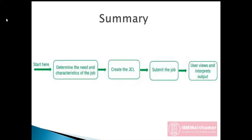What we discussed so far is explained in the flow diagram. First, determine the need and characteristics of the job. Once it is determined, we have to code a JCL. After coding is completed, execute the JCL, and once execution is completed, we will get the output.